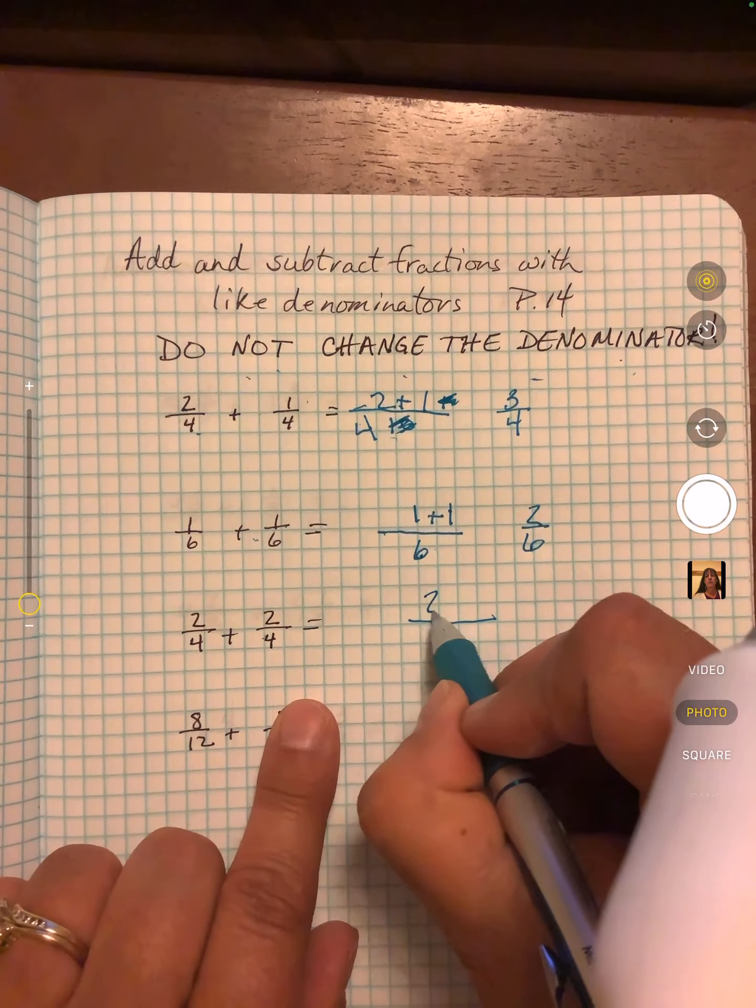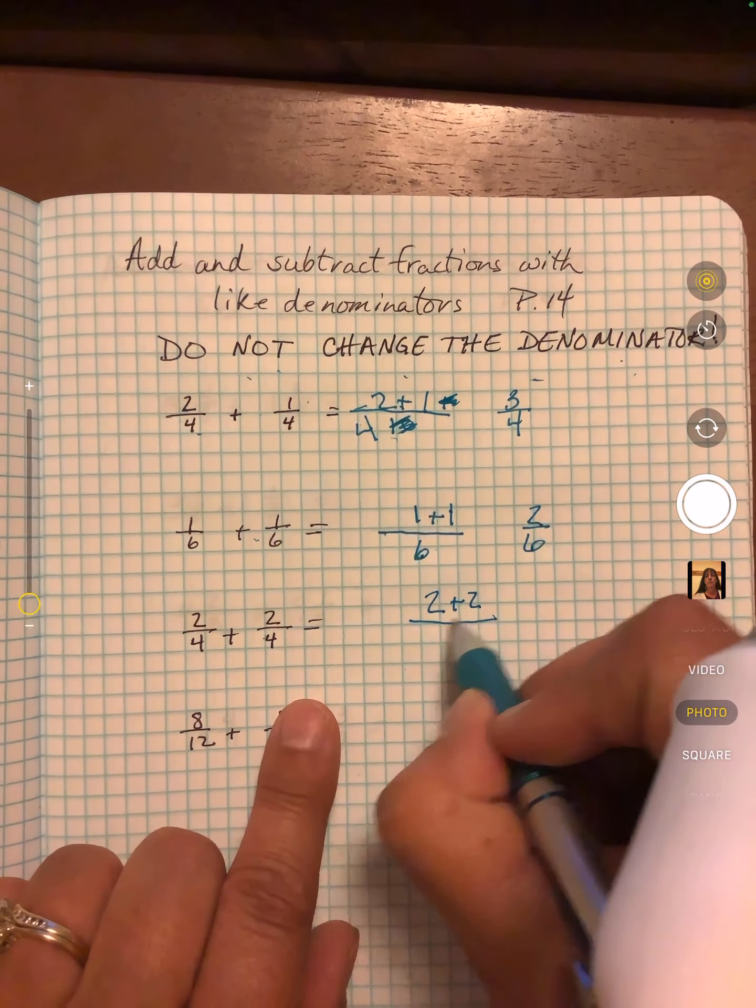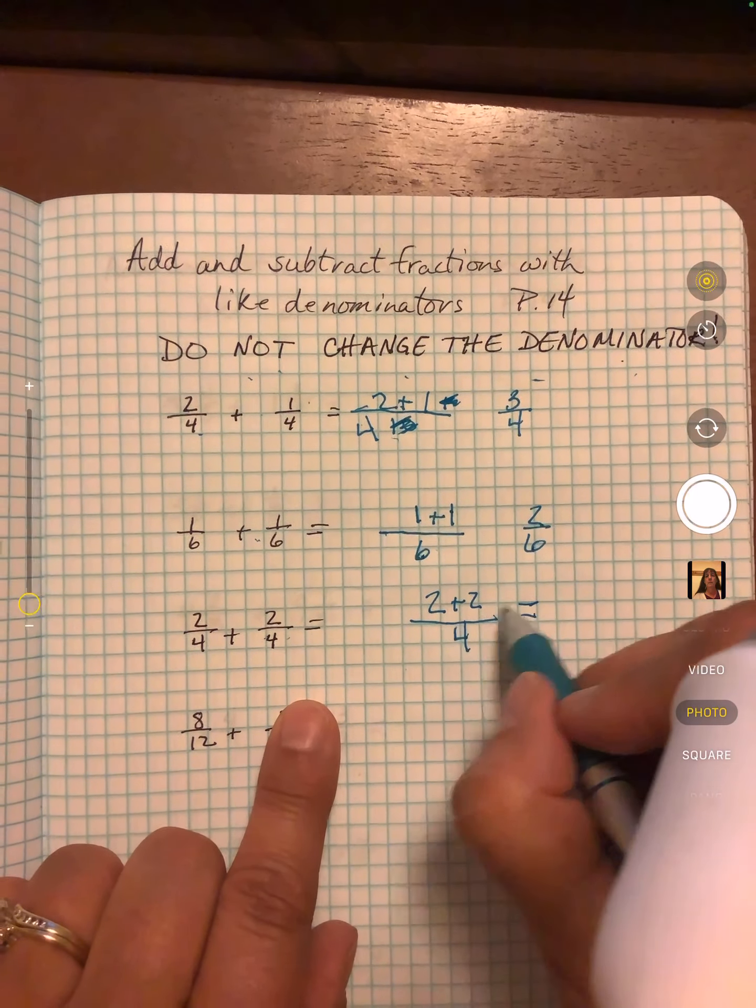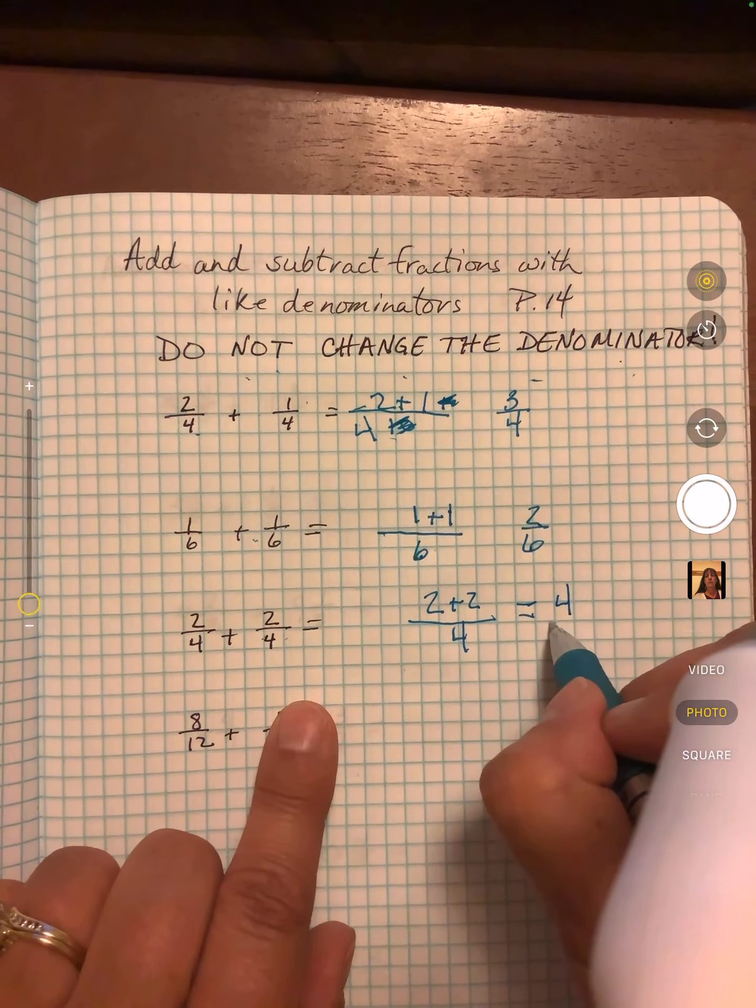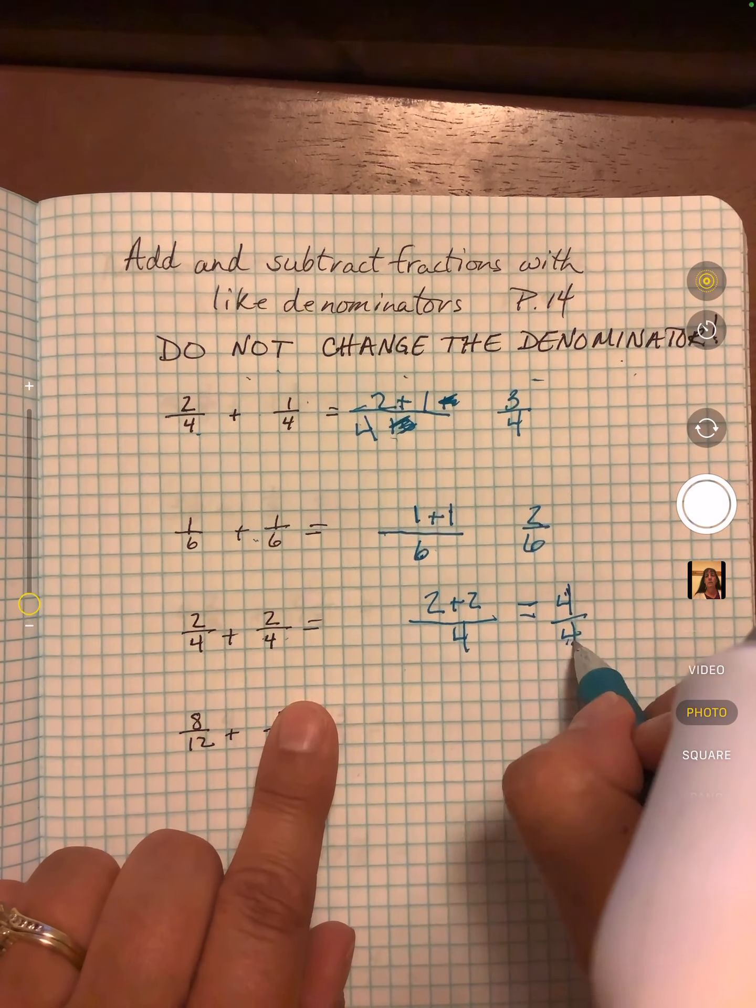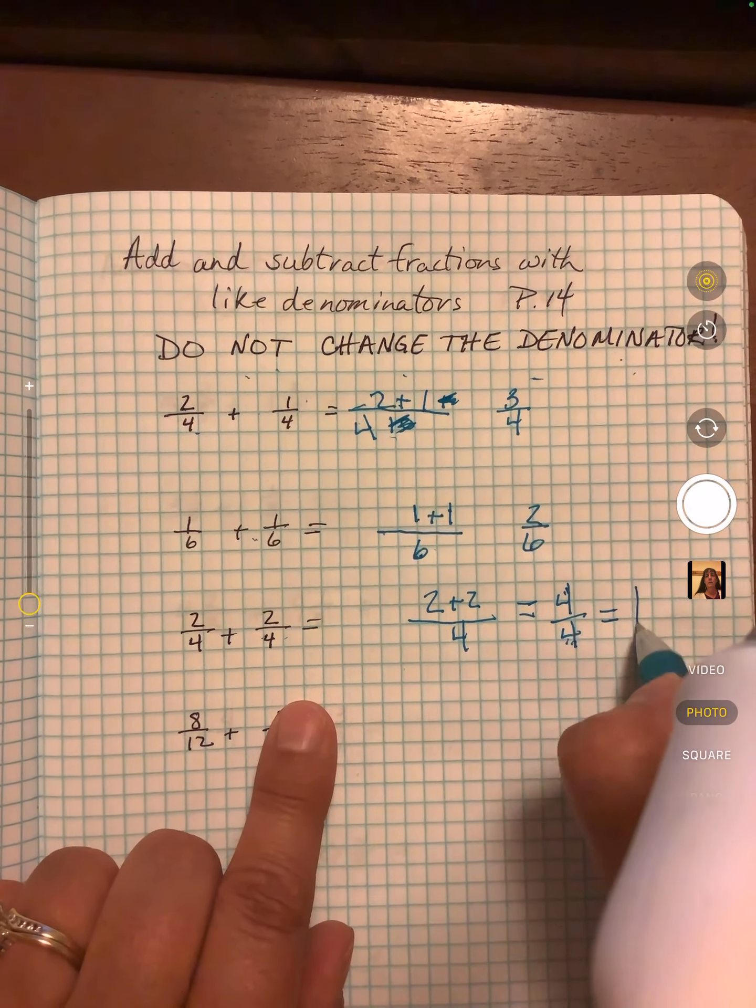Again I can go like this: two plus two. I just move the four over like that. So two plus two is four over four. When we have the same number like that it equals one.